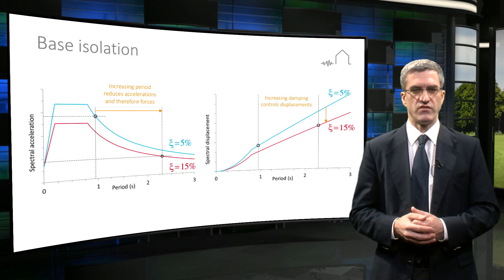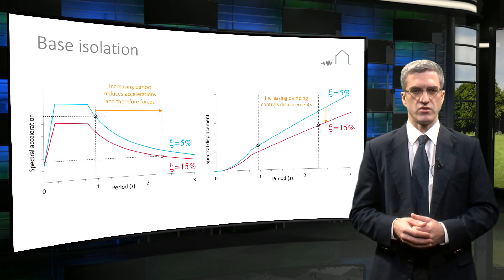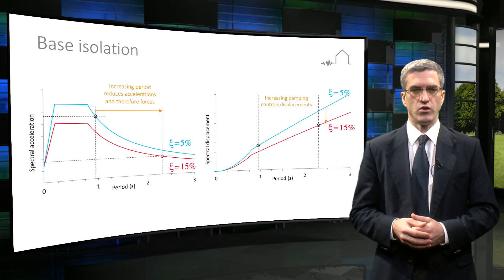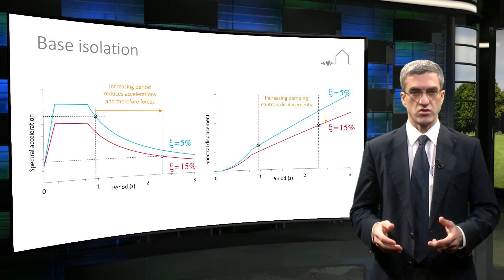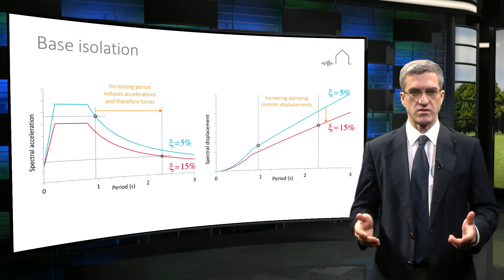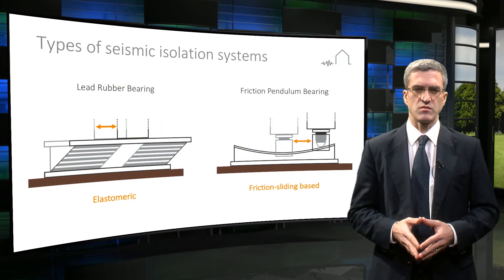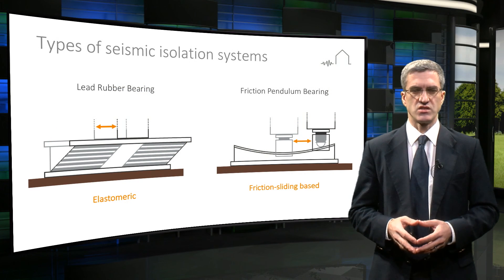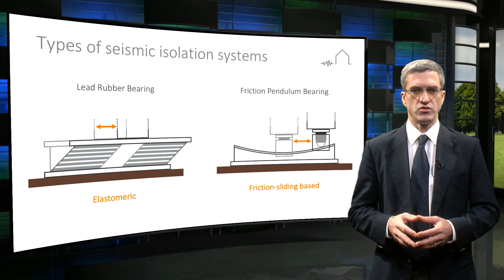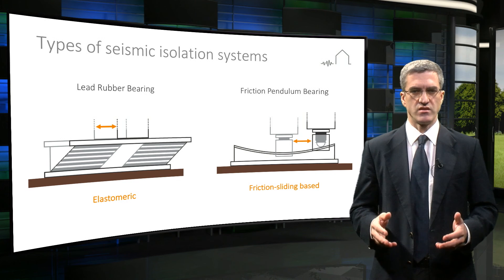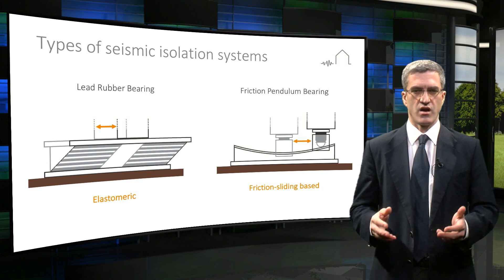Base isolation is very effective for buildings that have short periods of vibration, but it is not effective for long period structures such as tall buildings. The first modern engineered seismic isolation systems emerged in the 1970s and the main types in current use are elastomeric and friction sliding based isolators.